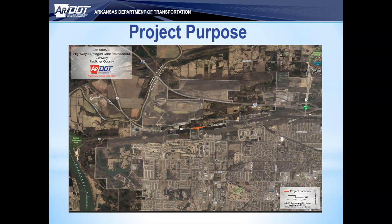The purpose of the project involves implementing a roundabout intersection at Highway 64 and Hogan Lane in Conway. We understand that a major part of addressing road safety challenges involves intersections. Circular intersections, or roundabouts, are one strategy to address intersection safety.